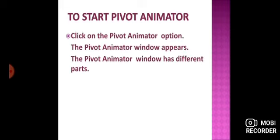The Pivot Animator folder expands. जब उस पे जाएंगे तो वो और आगे expand हो जाएगा, मतलब वो और आगे open हो जाएगा. Click on the Pivot Animator option — वहाँ से आप Pivot Animator option पे click करेंगे. The Pivot Animator window appears — और Pivot Animator की window open हो जाएगी. The Pivot Animator window has different parts. I hope these steps are clear to everyone.